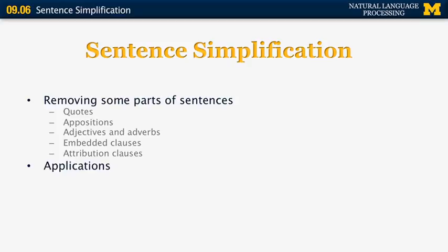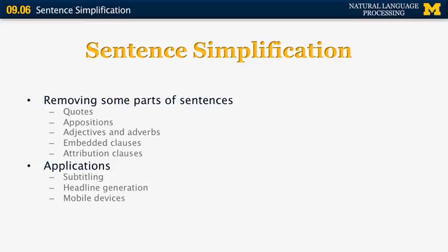Why do we want to do sentence simplification? There are many different applications for it. One is for things like subtitling — very often there is not enough space on the screen to include the entire sentence, so it's possible to include just portions of it instead. Another application is headline generation for mobile devices, where you may want to produce a shorter version of a sentence to display in large font as part of a summary. If the user wants to read more, they can click on the sentence and see the full text.